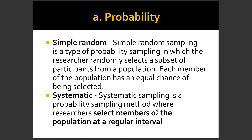There are different types of probability sampling. The first is simple random sampling, a type of probability sampling in which the researcher randomly selects a subset of participants from a population. Each member of the population has an equal chance to be selected. Common techniques for simple random sampling include the lottery method or the draw lots method.